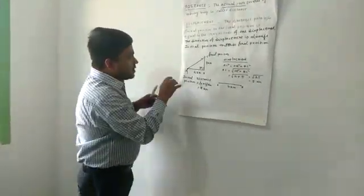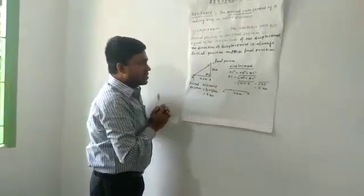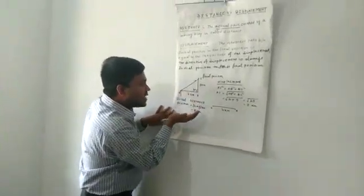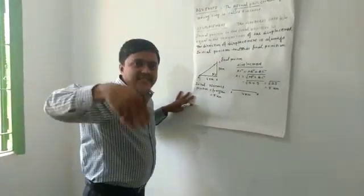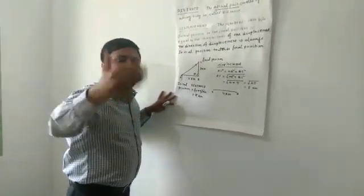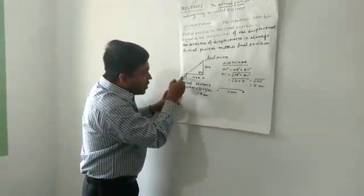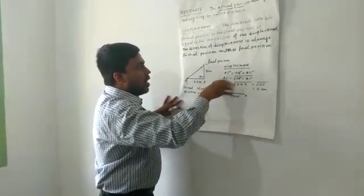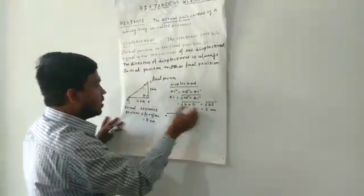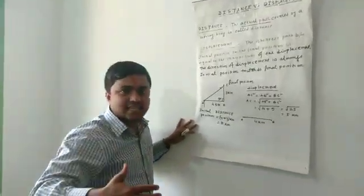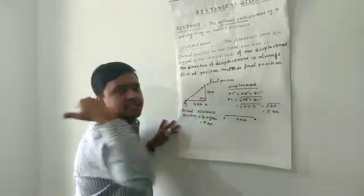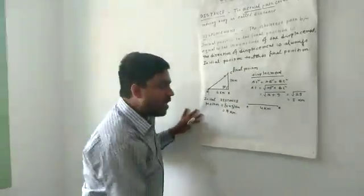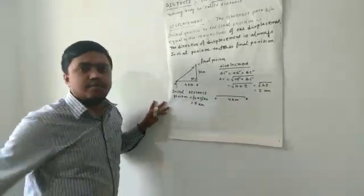And if the particle changes direction, then the value of distance and displacement are not the same. If the particle changes direction, at that moment the value of distance will be greater than the value of displacement. And if the particle moves through a straight line with initial and final position remaining the same, then distance and displacement will remain the same.